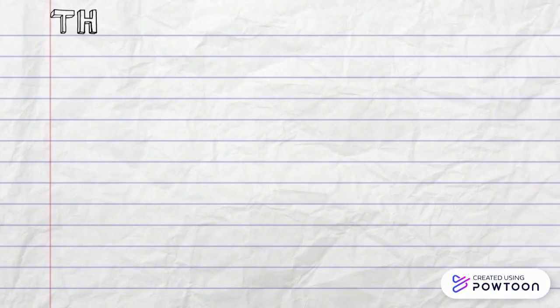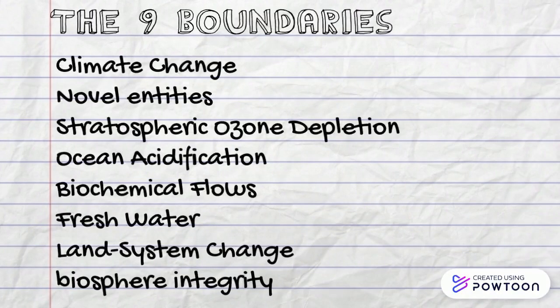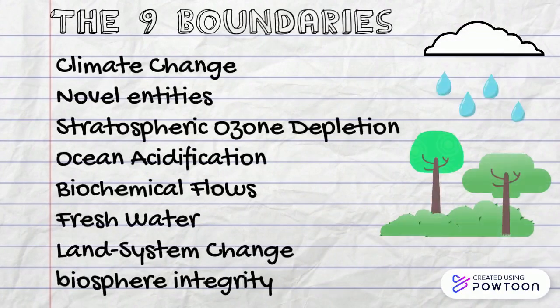The nine boundaries are: climate change, novel entities, stratospheric ozone depletion, ocean acidification, biochemical flows, freshwater, land system change, and biosphere integrity.